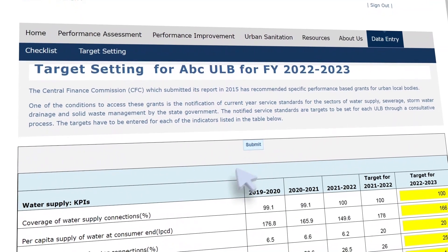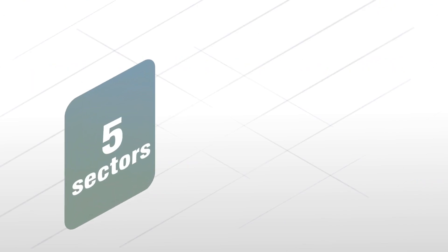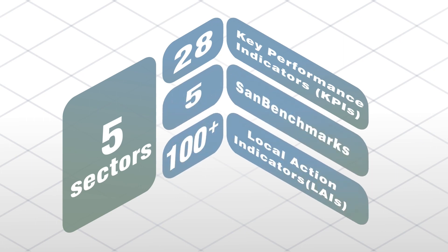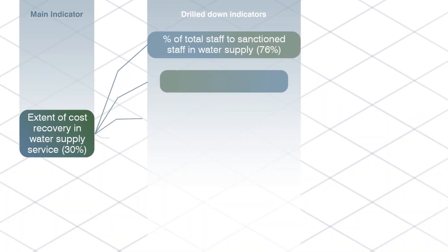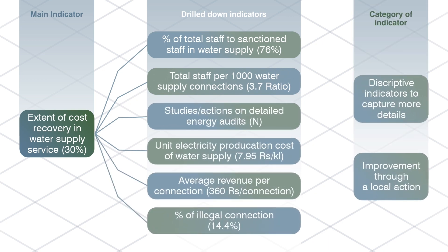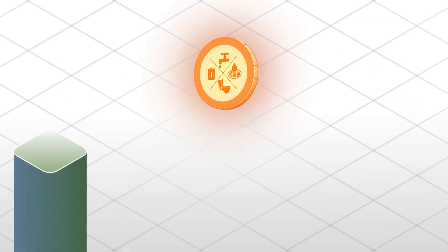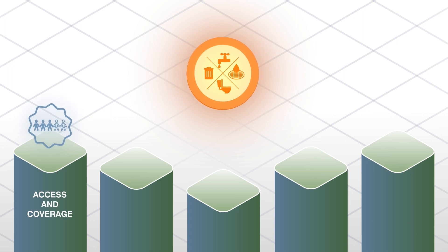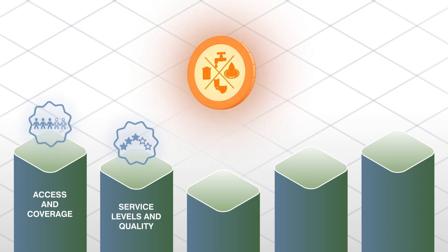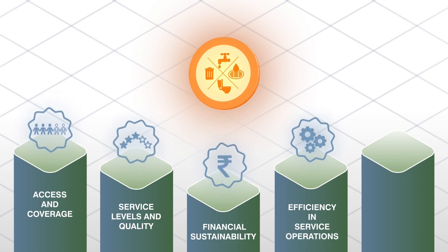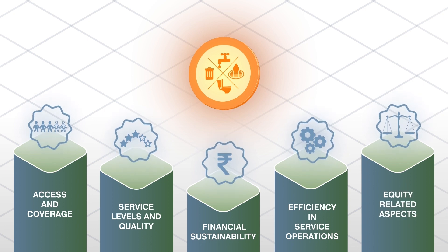The system generates 28 service-level benchmarks, 5 SAN benchmarks, and 100-plus local action indicators (LAIs). Local action indicators help better understand the results of the SLBs and suggest local actions for improvement. Cities can see LAIs at the end of each sheet. These performance indicators are categorized under five themes: Access and Coverage, Service Levels and Quality, Financial Sustainability, Efficiency in Service Operations, and Equity Related Aspects.